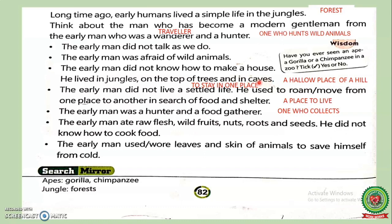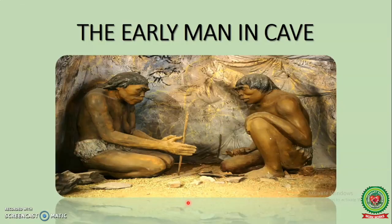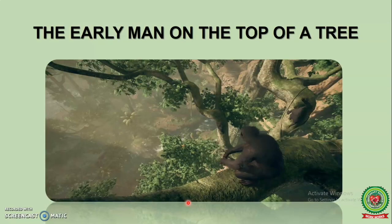Underline 'caves' — write its meaning: 'a hollow place of a hill.' Here you can see the early man in the cave and on the top of a tree.